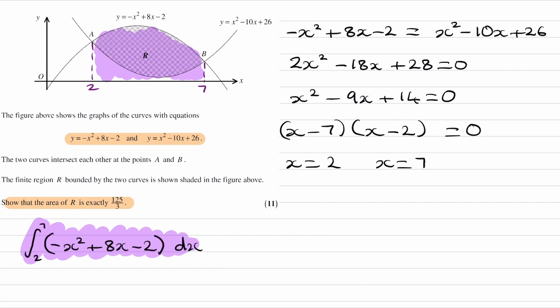And then we want to take away this bit at the bottom, which is the area beneath the lower curve. So we want to take away the integral of that lower curve, x squared minus 10x plus 26. If we integrate that between 2 and 7, we end up with that blue area that we see here.